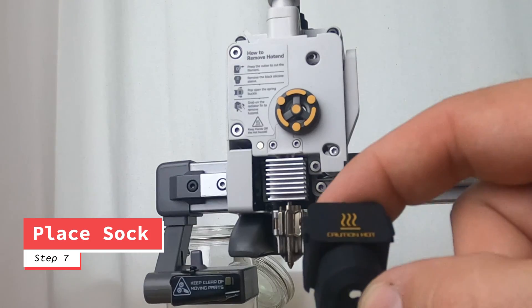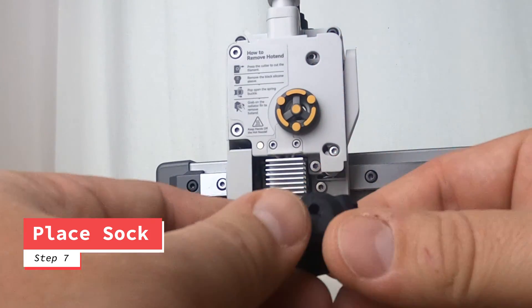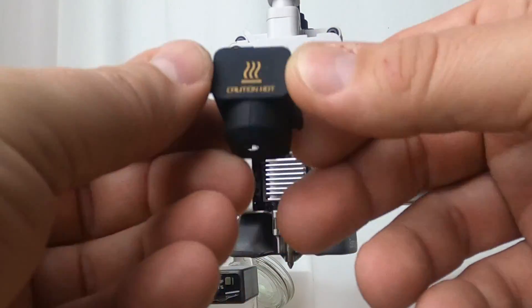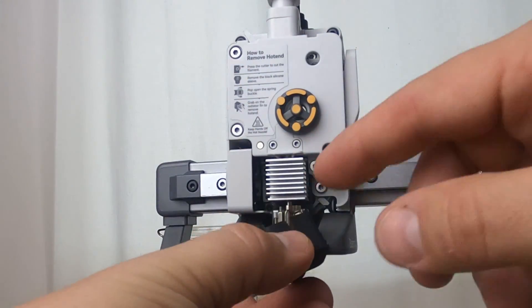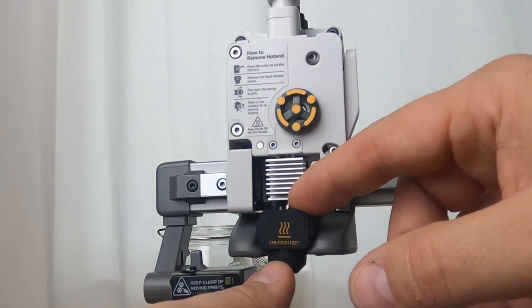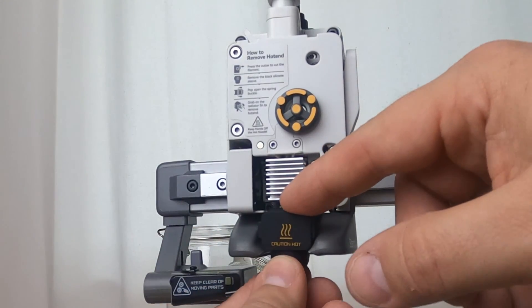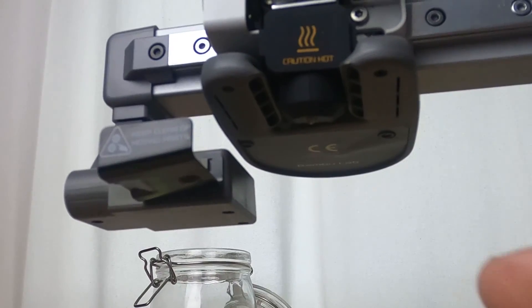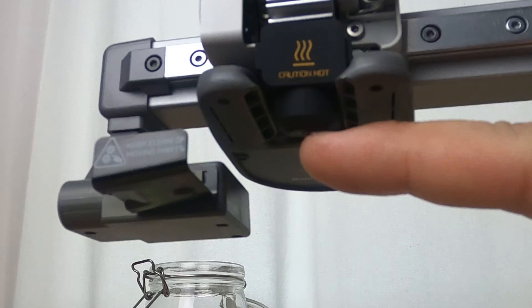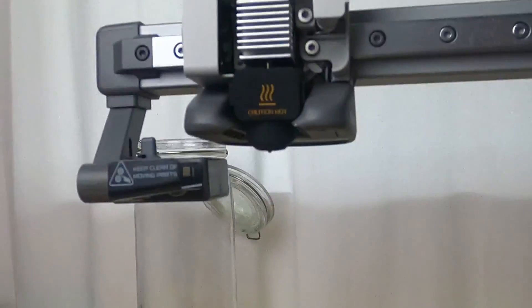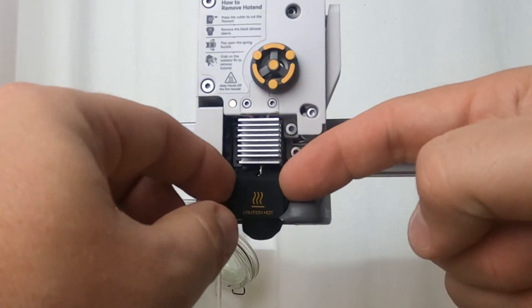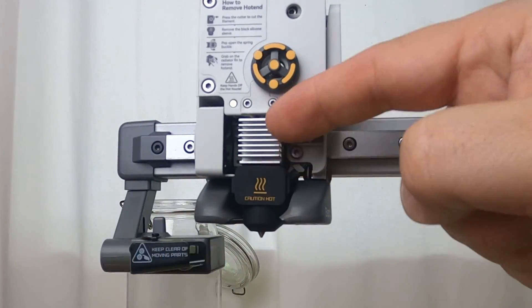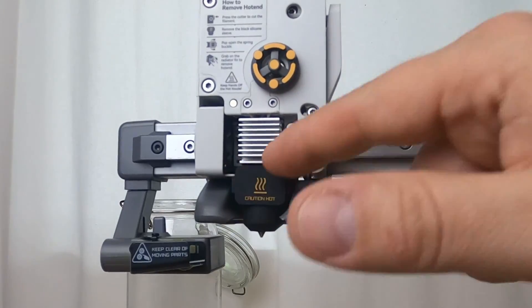The next thing you're going to want to do is take your rubber sock, and you'll see that it's open at the top here but closed at the bottom. So what you're going to do then is make sure that the bottom part gets placed underneath the tip of your hot end. You'll see the little tip sticking out right here. And then you're going to make sure that the rest of the sock is neatly wrapped around in between the part of the hot end and the heat sink and making sure it's nice and flush.